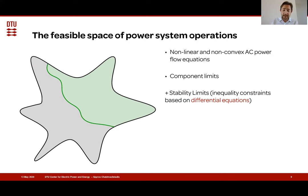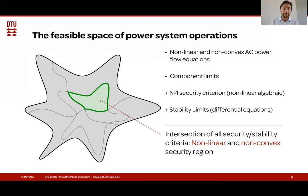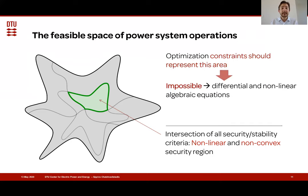Electricity markets and optimization problems in power systems have to take the intersection of those different security criteria and find the optimal operating point inside this intersection. The problem is that this is usually impossible because it contains a set of differential and nonlinear algebraic equations, which make it very hard to solve.